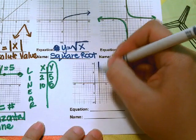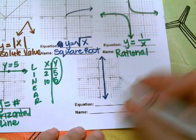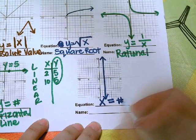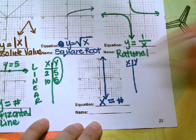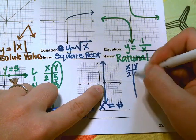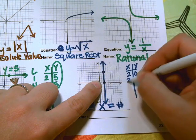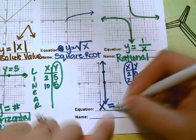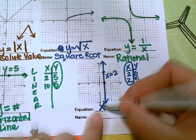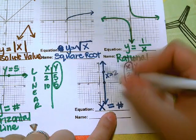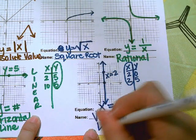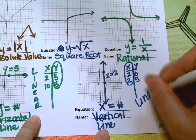Next we have a vertical line. To graph a vertical line, you're going to have x equals and then a number. If I make a table for this graph, this point is at 2, 0 and this point is at 2, 5. Notice the x-values are always 2, so the equation is x equals 2. You're always going to have x, an equal sign, and a number for a vertical straight line. This is a vertical line, and it is linear because it makes a line.